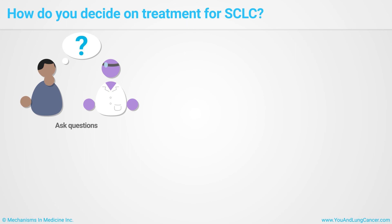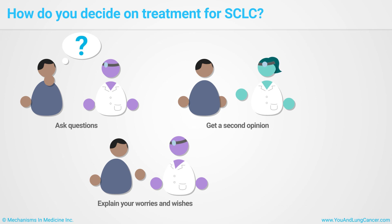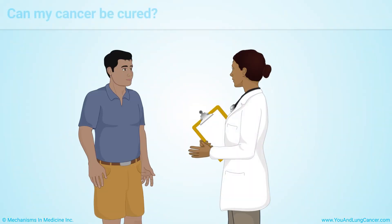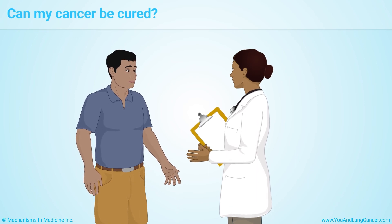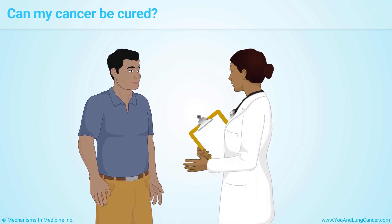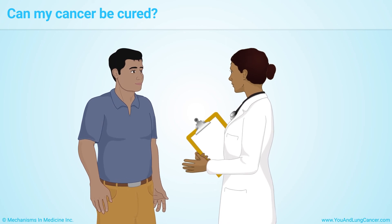When you meet with your doctor, be sure to explain your worries and wishes. Ask for a second opinion, and ask if there are any clinical trials you could join. Ask your doctor if your cancer can be cured. New treatments have helped people with small cell lung cancer live longer than ever before.